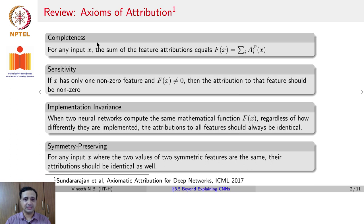The completeness axiom says that for any input x, the sum of the feature attributions equals F(x), which means if you had say n different attributes or 10 different attributes in your input, the sum of their attributions should be the actual output that you get of the neural network, the sum of the attributions with respect to your neural network should be the actual output.